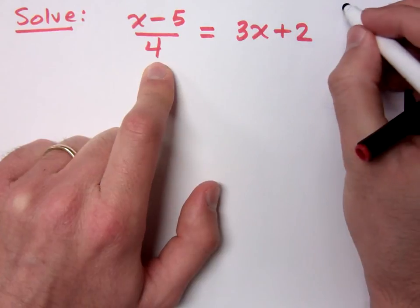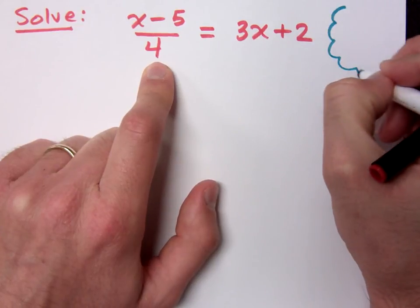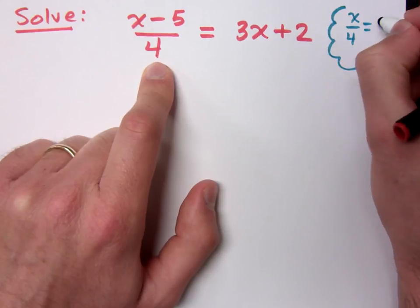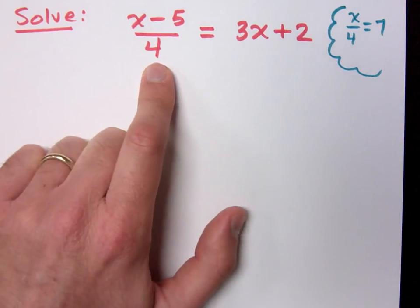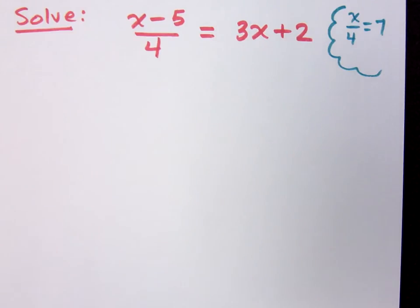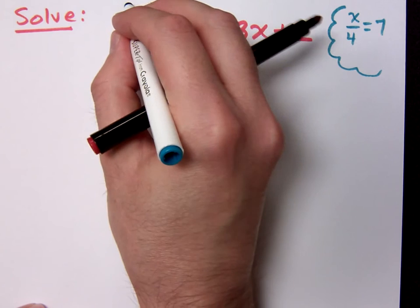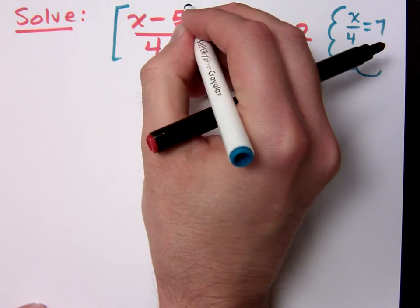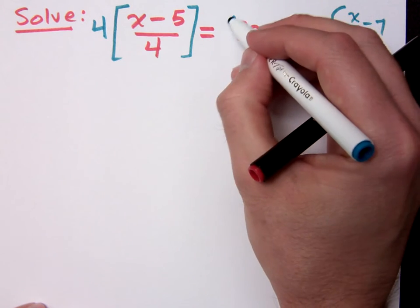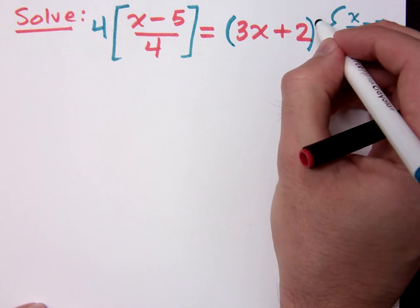Here's my little thought bubble, something for us to think about. If I had x divided by 4 is equal to 7, how would I fix that so that I wouldn't have the division by 4? It's multiplication by 4, right? The opposite of dividing by 4 is multiplying by 4. So I can do that here on the left side — multiply times 4 — and I'm going to do the same thing on the right, multiply times 4.